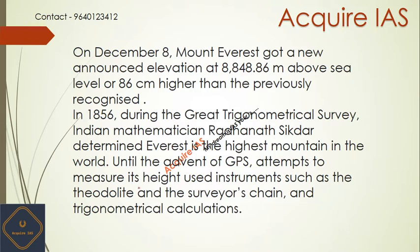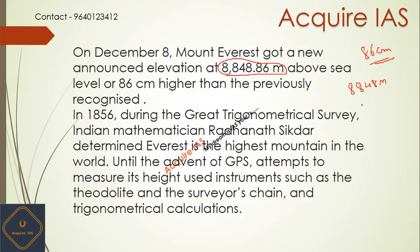On December 8th, Mount Everest got a new announced elevation of 8848.86 meters. It got 86 centimeters added to the new measurement. Previously it was believed that the height of Mount Everest was 8848 meters only; now it is revised as 8848.86 meters above sea level, which is 86 centimeters higher than the previously recognized measurement.